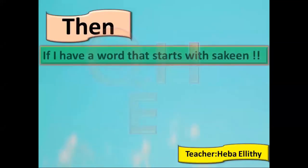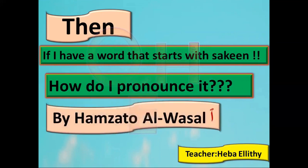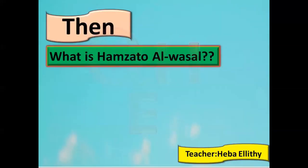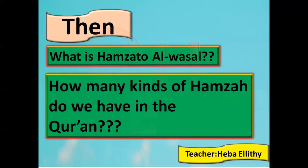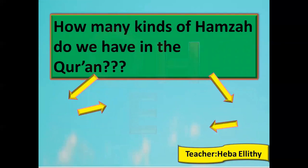So, if I have a word that starts with Sukun, how can I read it? I have to have Hamzat al-Wasl at the beginning of it to read this word. Because Hamzat al-Wasl, when I start, has one of the Harakat — Fatha, Dhamma, or Kasra — depending on the word. That means I start with a Haraka, not with Sukun anymore. Let's go together and see what Hamzat al-Wasl is, and how many kinds of Hamzat we have in the Quran.